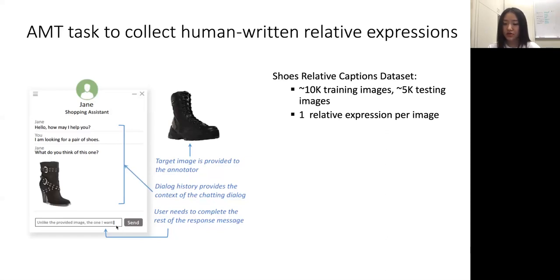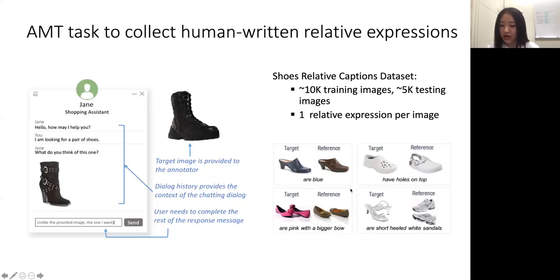We apply this annotation interface for a Shoes dataset, and in the end, we obtain roughly 10K training image pairs and 5K test pairs. For each pair of images, we have one relative expression. Here are some examples of the relative expression. Notice that these sentences can be of different length. For some easy pairs, the user might simply use one attribute to describe the difference, such as the first image. And interestingly, when some images are very similar, the user might choose to give very specific and detailed feedback. Like the second example, users would say this shoe has holes on the top.